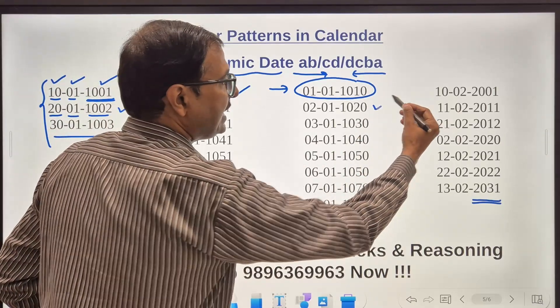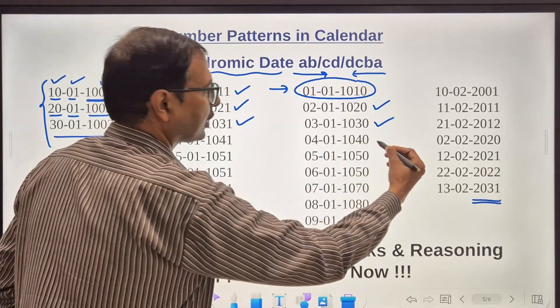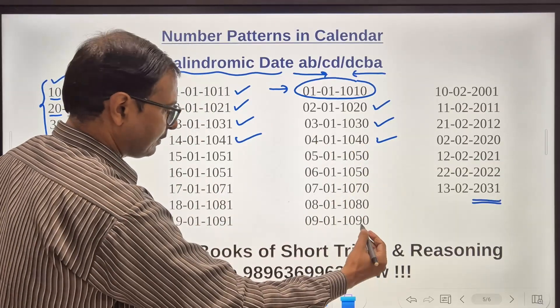And then 11-01-1011, 12-01-1020, 21-02-1021, 13-01-1030, 31-03-1031, 14-01-1040, 41-04-1041, likewise up to 19-01-1090, 91-09-1091. You have so many different palindromic dates.